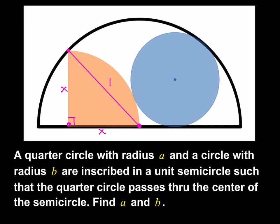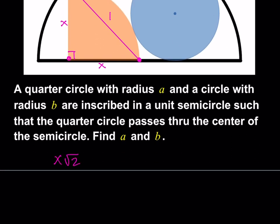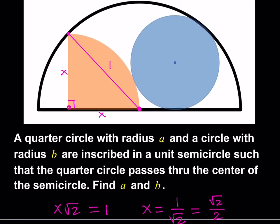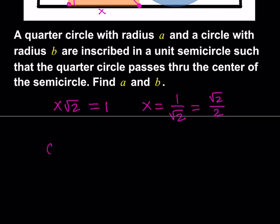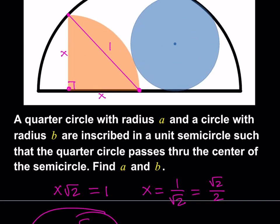As we know from basic geometry, if you have an isosceles right triangle, its hypotenuse is square root of 2 times the legs. Therefore, x times square root of 2 equals 1, giving us x equals 1 over square root of 2. If you rationalize the denominator, you get root 2 over 2. That length is important because it gives us the radius of the quarter circle. So x is the same as a, therefore a is root 2 over 2.